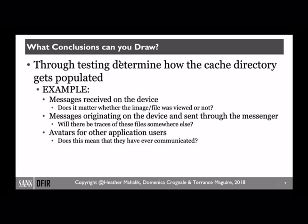So now the conundrum: what happens if you don't have full file system access? On that Android device I showed you, I was rooted — I could get that entire internal data directory from the NAND flash. On my iOS device, I was jailbroken — I could get to that database in the group or third-party directory. But if I'm not rooted or jailbroken, and I only see those images that populated that cache directory, what kind of conclusions can I draw?